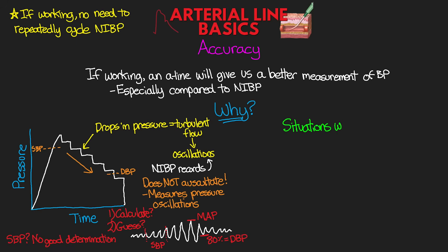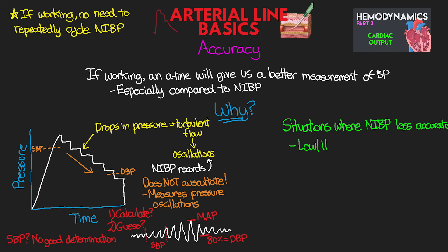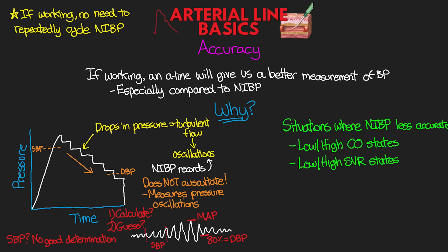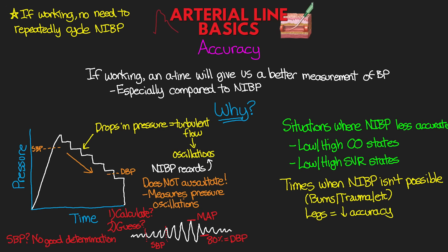There are also situations in which a non-invasive blood pressure is going to be even less accurate — in low and high cardiac output states, as well as low or high SVR states, the non-invasive pressure is not going to be accurate. In addition, there are times where we will not be able to have a non-invasive blood pressure in place — think burns, trauma, etc. Sometimes we can use the legs, but again we're losing accuracy this way. As a result of all of this, our patient's blood pressure values from a non-invasive blood pressure, especially the systolic, are not necessarily the true values. They may be close or even right on sometimes — remember that saying, a broken watch is right twice a day? But this is why, with a properly working A-line measuring the direct pressure in the vessel, it will be more accurate than a non-invasive blood pressure cuff.